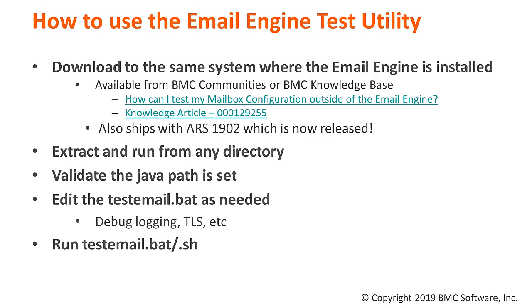Typically, it is best to download and run the utility on the same system where the email engine is installed, as this helps to validate the connectivity from the email engine server system to the mail server. This is especially useful when validating network connectivity issues. The utility is available on the BMC communities, as well as the knowledge base from the BMC support web. It can be extracted to and run from any directory — it does not have to be run from the AR Email Install directory.